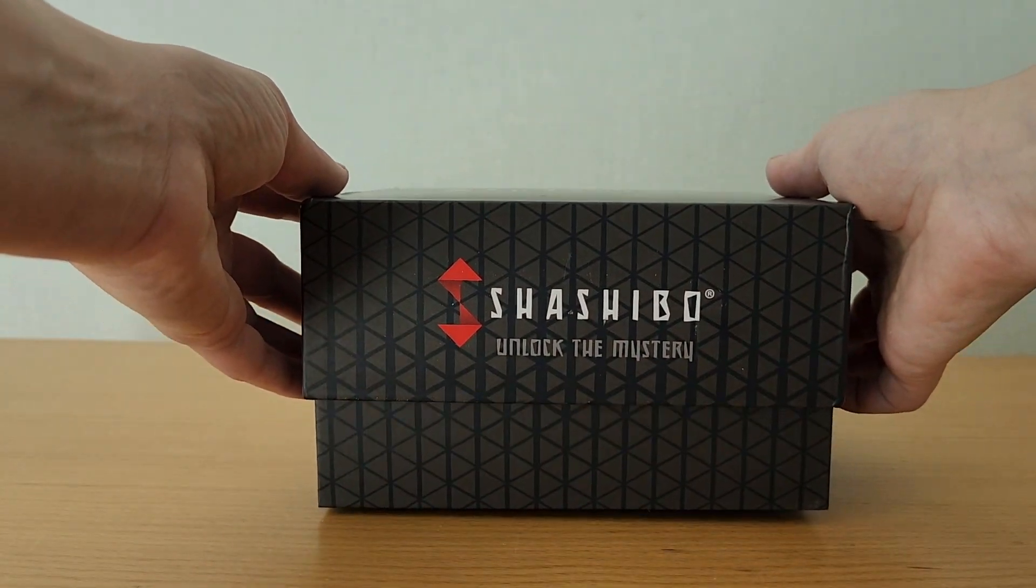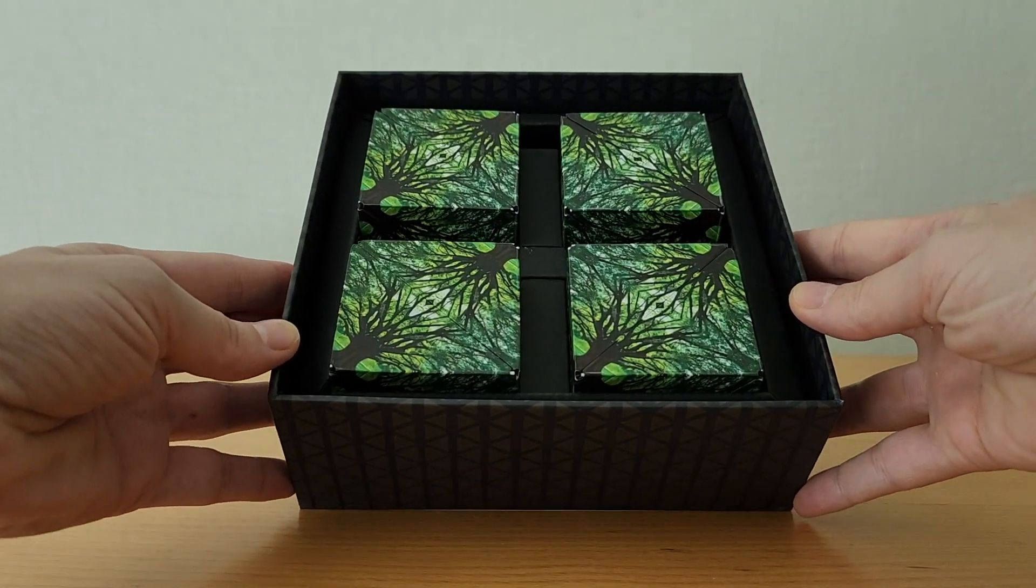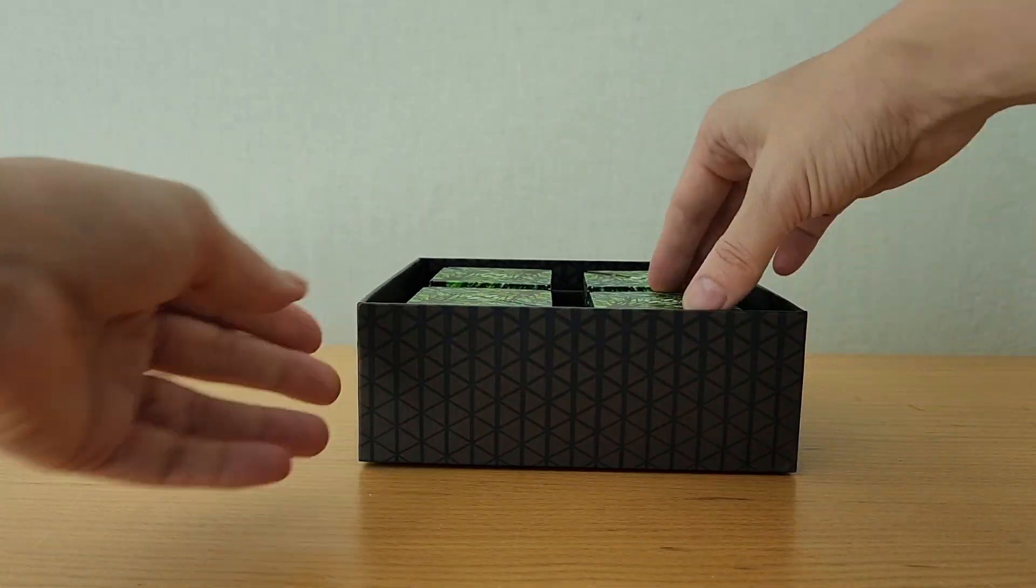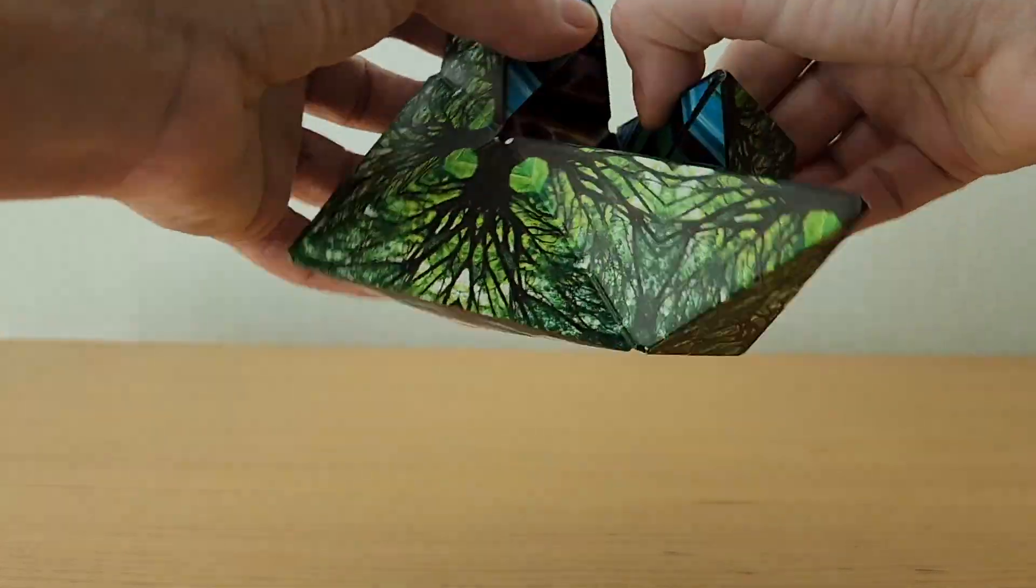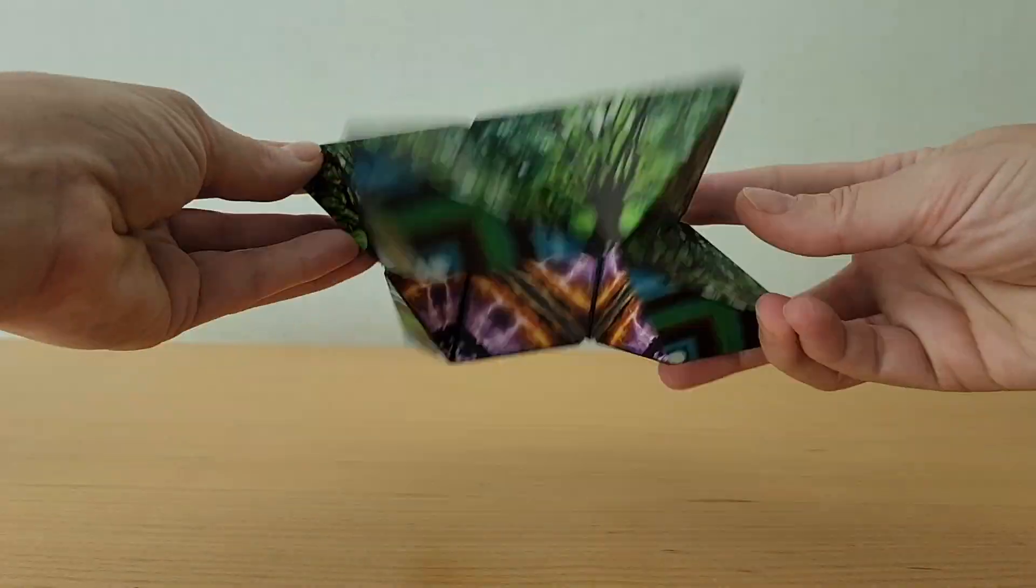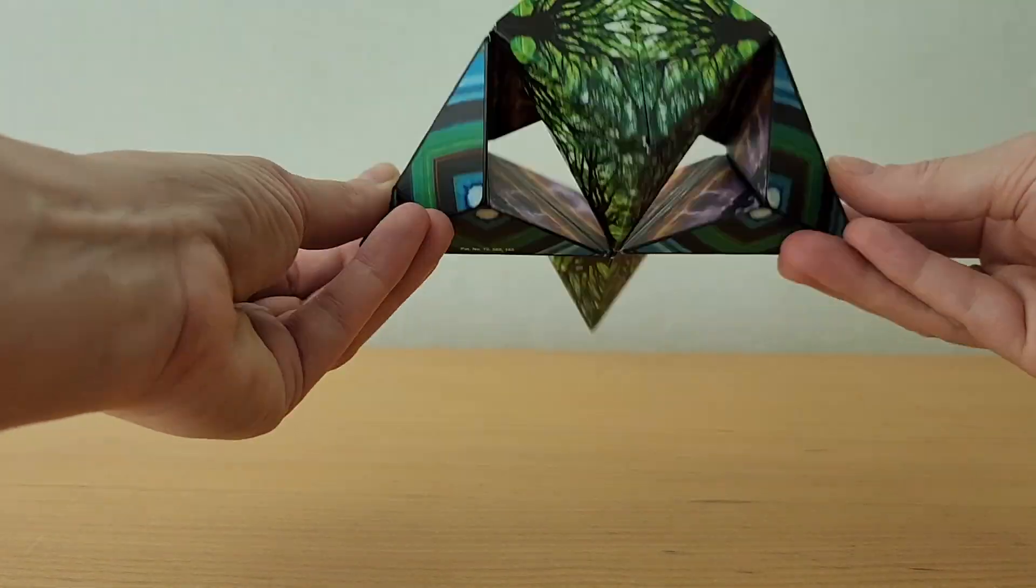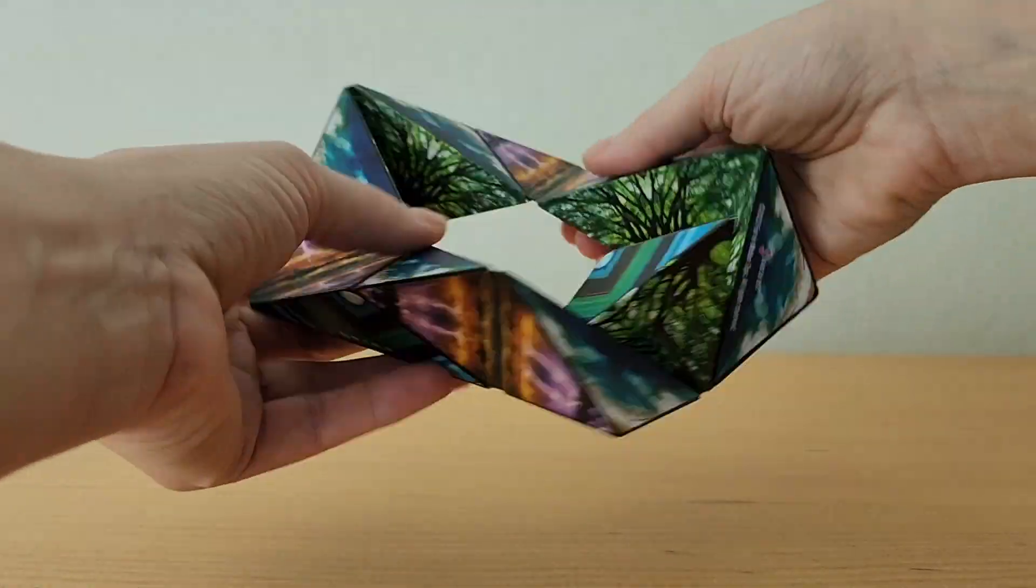This is Shoshibo. These are shape-shifting cubes. They are 3D puzzles made with powerful magnets inside of these beautiful, artfully designed shape-shifting boxes.